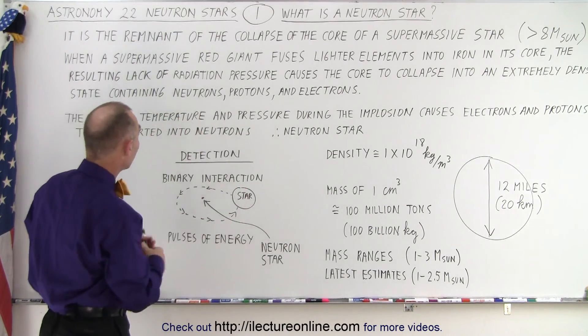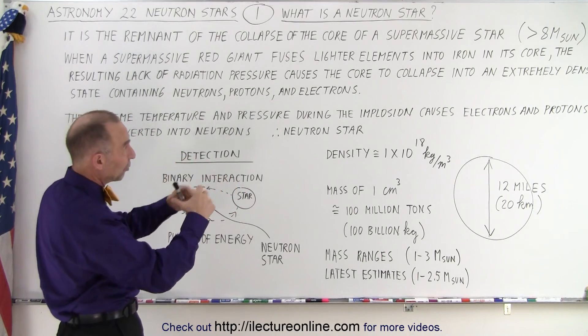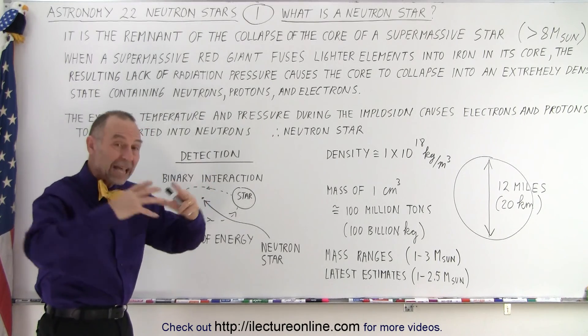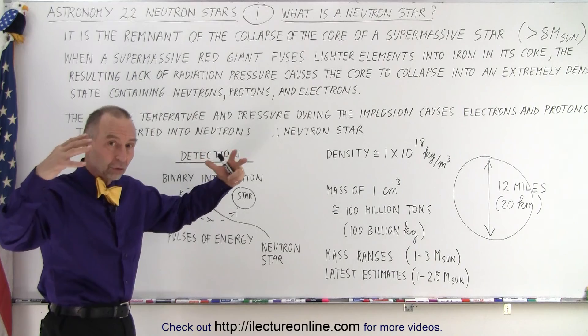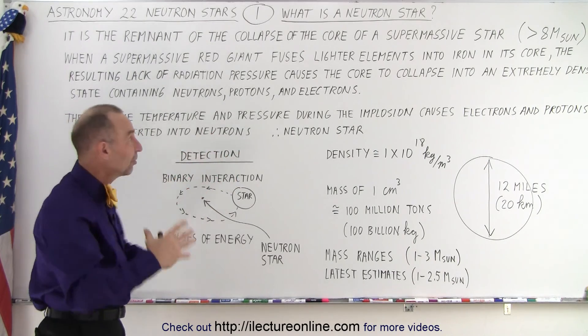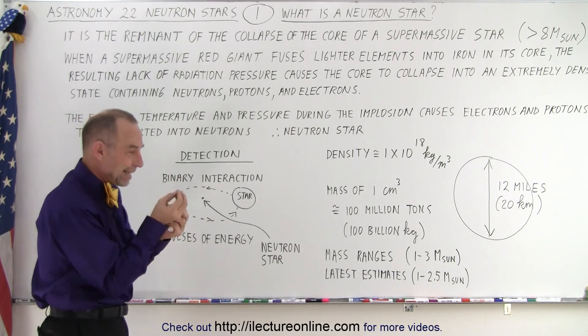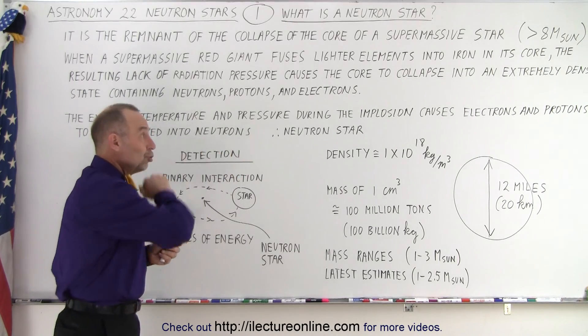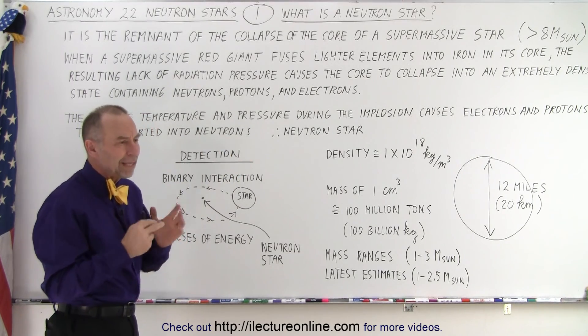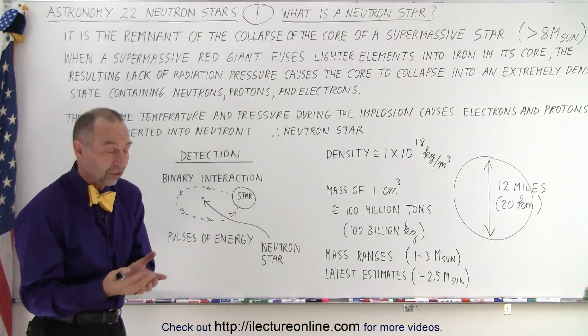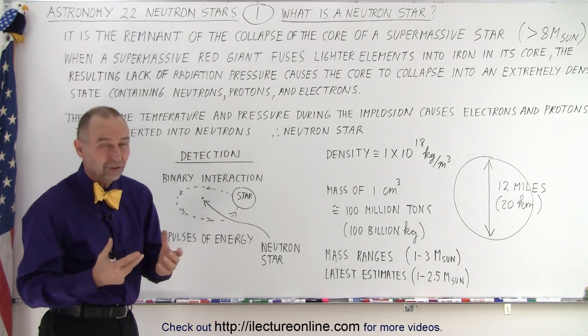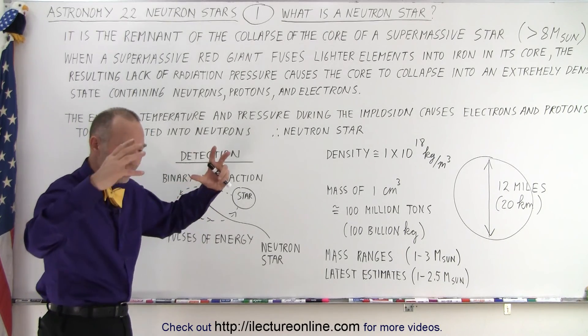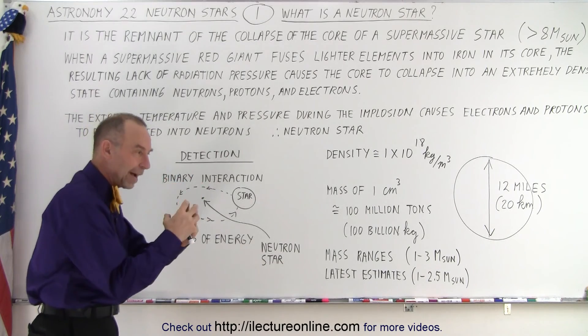Now, here you can read it. When the supermassive red giant fuses lighter elements into iron inside its core, then the radiation pressure that used to keep the core and the star in its current size ceases, the core collapses, and when the core collapses it pushes the electrons and the protons together, turning them into neutrons, and therefore hence the name neutron star. Now, it doesn't mean that the entire neutron star is made up of neutrons, it still contains electrons and protons, and we'll see later on why we know that, but at least that's where the concept of the name came from, because the implosion caused the electrons and the protons to combine into neutrons.